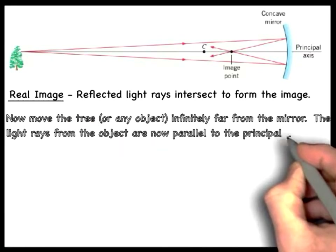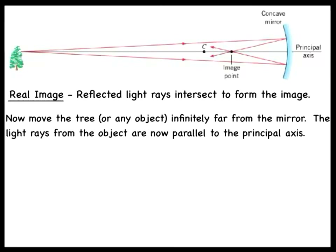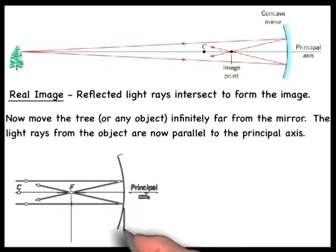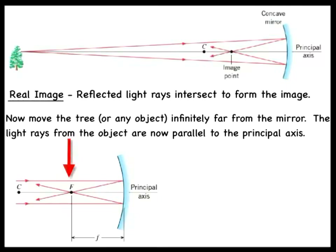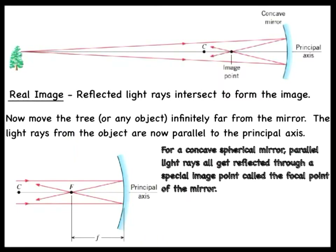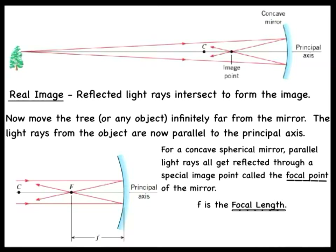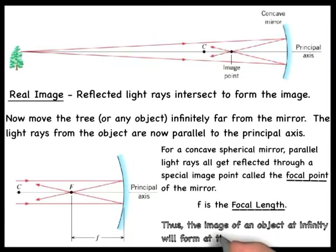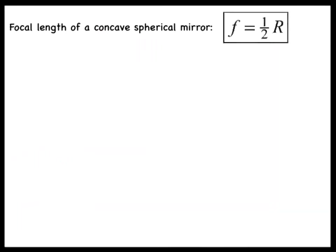If we move the tree very far away from the mirror, essentially at infinity, then the light rays arriving from the tree will all be parallel to the principal axis. Upon reflection, they pass through a special image point on the principal axis known as the focal point of the mirror. The distance from the mirror to the focal point is called the focal length. With a little geometry and properties of similar triangles, it can be shown that the focal length of a concave spherical mirror equals one-half of the radius of curvature.